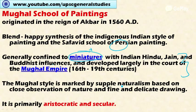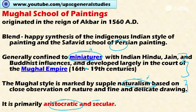An important characteristic of Mughal painting is that it is marked by simple naturalism — naturalism is the key here — based on close observation of nature and fine, delicate drawing. Another important characteristic is that it is primarily aristocratic and secular. Aristocratic means the paintings are related to the day-to-day activities of kings and emperors, and to court scenes.